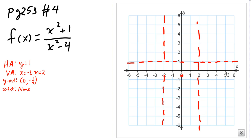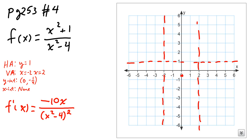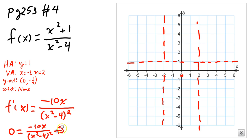The first thing I need to do is find the derivative of my original function. Taking a look, this is the derivative of this function. To find my critical values, I set my derivative equal to 0 and solve for x. I get negative 10x over x squared minus 4 squared equals 0. The numerator is the only thing I need to set equal to 0, so I get x equals 0. I have a critical value at x equals 0.